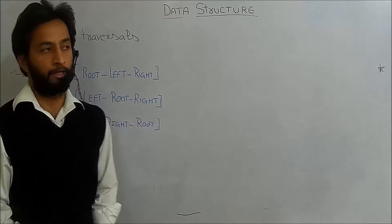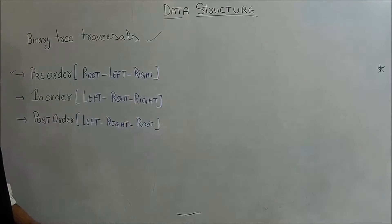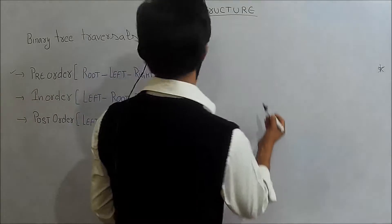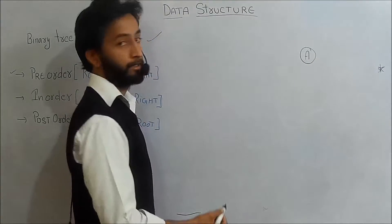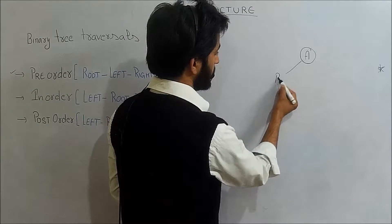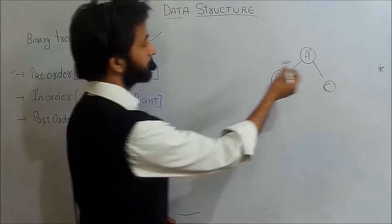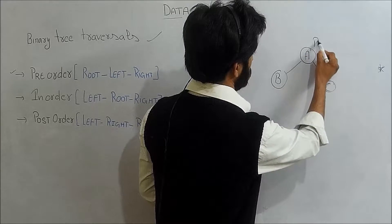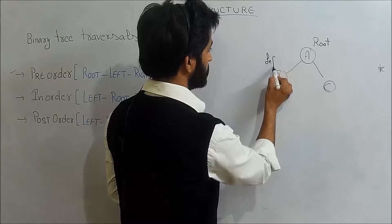Next is binary tree traversals. Generally we have three types of binary tree traversals: first is pre-order, second is in-order, and third is post-order. Before going into the detail of these three traversals, let us take a quick look at a binary tree. For example, I am taking a node A. Node A has left child B and right child C. This is a binary tree because each node has at most two children.